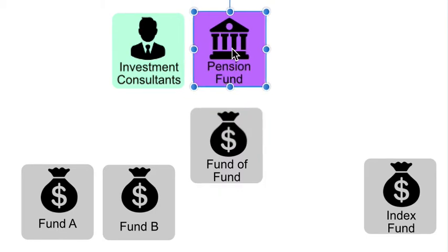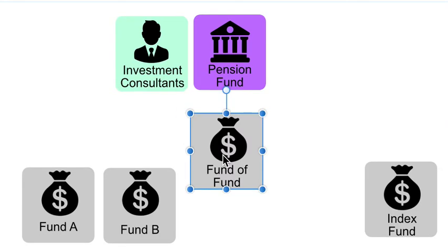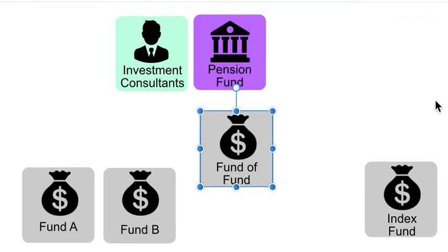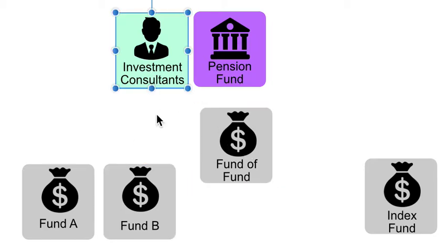That is something a pension fund needs to be aware of, and an investment consultant should be telling the pension fund. The problem is there's a conflict of interest because sometimes the investment consultant works for a company or is underneath a corporate entity that also owns a fund of funds and also owns the underlying funds, meaning all three are working for the same corporate entity — which breaks down the whole integrity and independence. This conflict of interest affects the distribution of their products and the mix of their underlying assets, with inappropriate incentives to invest within the same corporate entity to keep business under one brand.